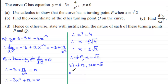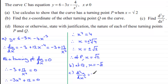For part c, we need to find d²y/dx², the second differential of y. We differentiate dy/dx with respect to x. The constant minus 3 goes to 0, and 12 times minus 4 gives minus 48. So d²y/dx² equals minus 48 times x to the power minus 5, which is the same as minus 48 over x to the power 5.